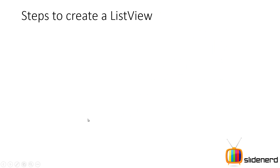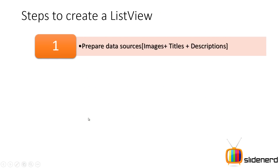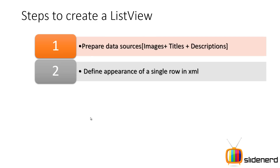What are the four steps to create a list view like the one you saw? Step one: prepare the data sources — take those images, titles, and descriptions and merge them. Step two: define the appearance of a single row in XML. A list view is a container view; each single row is a separate view with components inside, so you have to define how one row appears in a separate XML file.